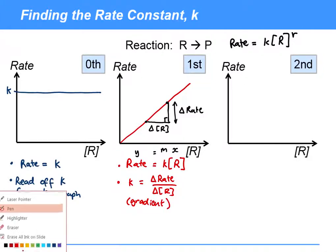A second order reaction is going to look like a quadratic graph, so it's going to rise much more steeply as the concentration of reactant increases.